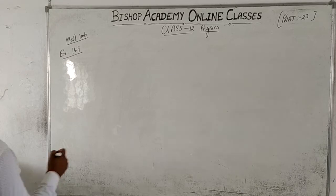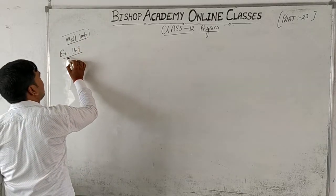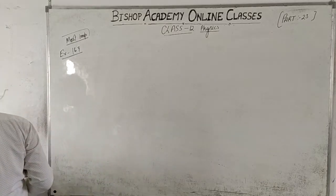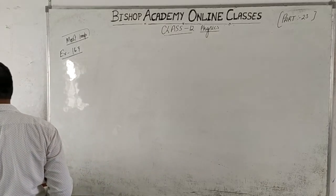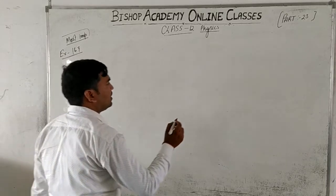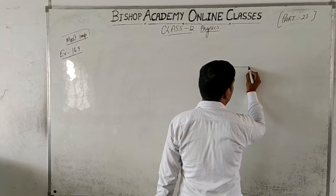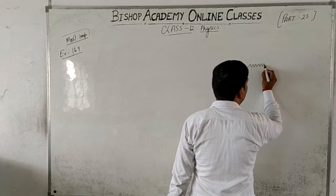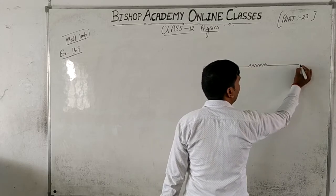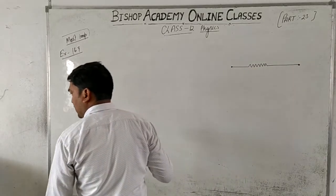The next question is a very important one — Question number 169, Example 169. Let's first draw the figure so everything is clear. There is an AB wire — note that this AB is the potentiometer wire. Along with it there is a resistance connected.